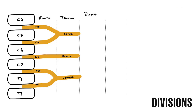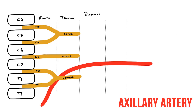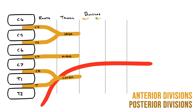Each of these trunks then splits into two divisions. At this point we'll see a large vessel, the axillary artery, lying amongst the structures of the brachial plexus. Half the divisions pass behind the artery, the other half travel in front, and so we group them as the anterior and posterior divisions.